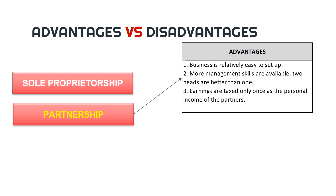The workload in the business or organization can also be divided among the partners. Number three: earnings are taxed only once as the personal income of the partners. The earnings of the partnership will be distributed to the partners and then taxed as their personal income. This means the earnings of the partnership are not liable for taxes — they only become taxable once distributed to the partners, and are taxed as each partner's personal income.